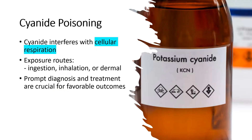Cyanide intoxication occurs when the body is exposed to high levels of cyanide, a potent toxin that interferes with cellular respiration. Cyanide can be encountered through various routes, such as ingestion, inhalation, or dermal exposure. It is important to recognize the signs and symptoms early, as prompt diagnosis and treatment are crucial for favorable outcomes.